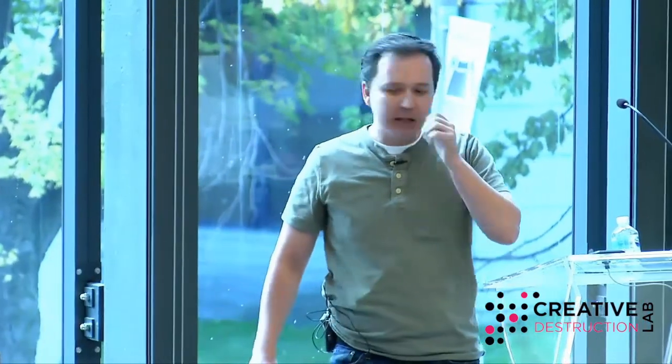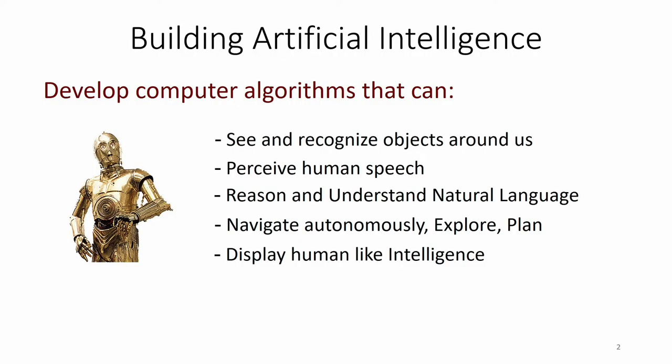In my view, what are we trying to do? We're trying to build educational intelligence. Building educational intelligence is to really build agents — computer algorithms that can see and recognize objects around us, that can perceive human speech, that can reason and understand natural language, that can navigate, explore, plan strategies, and display human-level intelligence.